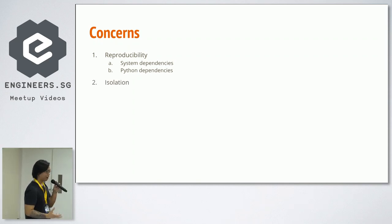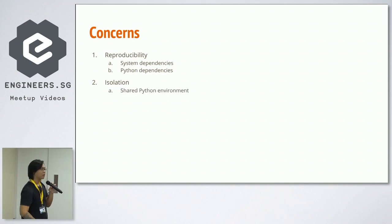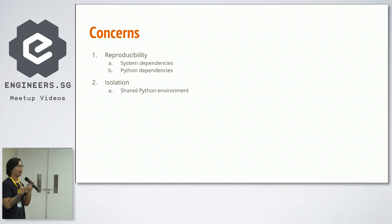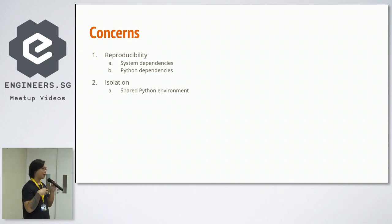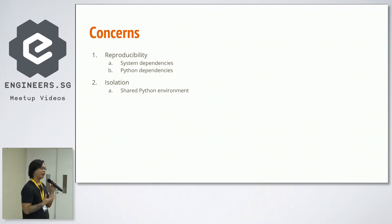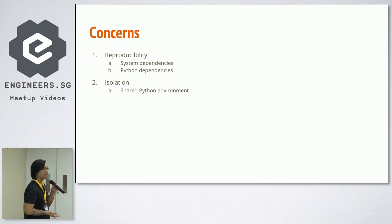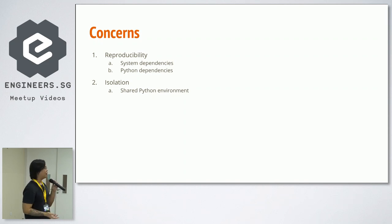The next issue is isolation. Since you're sharing a Python environment — let's say with Anaconda — whatever you install for one task would affect another task. For example, if you have package A and package B sharing a common dependency package C, and you upgrade package A, package B will be affected. So something unrelated to your currently running tasks gets broken.